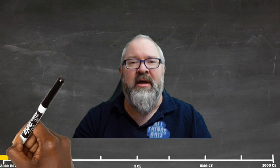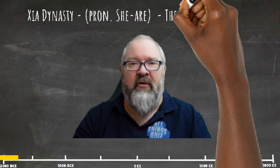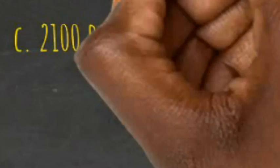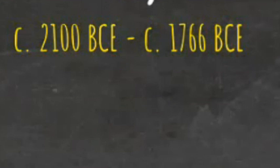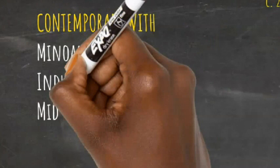The first Chinese dynasty dates to over 4,000 years ago — that was the Shia, who ruled from around 2100 BCE to 1766 BCE. That makes them contemporaneous with the Minoans on Crete, the Indus Valley civilisation, Middle Kingdom Egypt and the writing of the Epic of Gilgamesh. Due to a lack of written accounts, most of what we know is myth and legend.